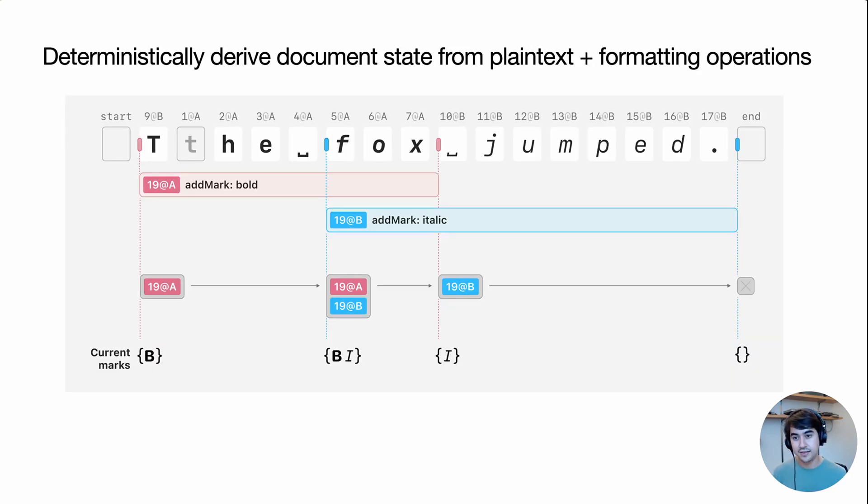A second key idea is that we can deterministically derive a state of the formatted document from the plain text sequence and our set of formatting operations. The basic idea is to iterate over the document from left to right and look at which operations are active in each region of the document and add them all together to arrive at the formatting for that particular span of the document. In the paper, we describe more details of how exactly this works and how we can make it efficient.